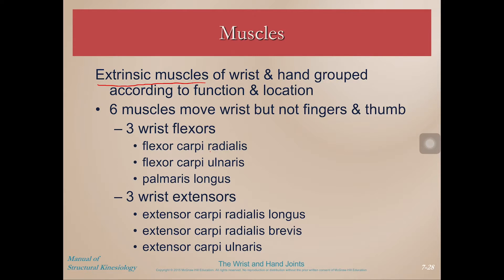Of the flexors we have flexor carpi radialis. Carpi refers to the wrist, so flexor carpi radialis means it's a wrist flexor on the radial side. Flexor carpi ulnaris is a wrist flexor on the other side, and then palmaris longus. Then we have three wrist extensors: extensor carpi radialis longus and brevis, and extensor carpi ulnaris. It seems like the names will be indicative of where they actually cross the wrist.